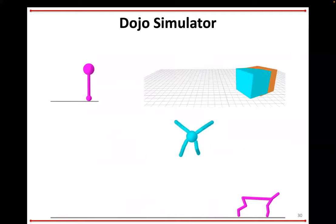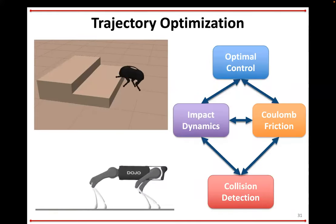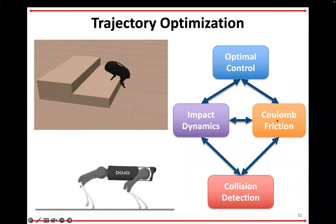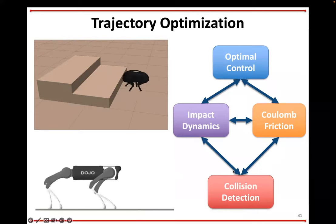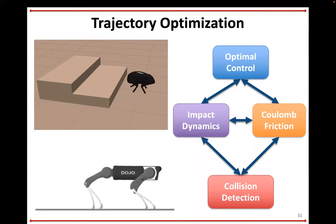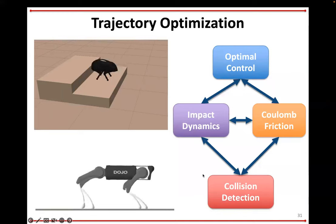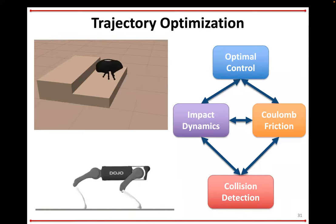Switching gears to trajectory optimization: now this is putting together the entire picture. At the bottom we have our geometry collision detection solver, Coulomb friction solver, impact dynamics solver, and at the top the optimal control problem solver. All of these are connected via blue arrows — the problem data from one is buried as a constraint function in another and vice versa. What we do to get the whole thing to work is crank down the central path parameters for all of these solvers in unison — start with everything smoothed out, then crank them together so the whole stack converges toward hard contact solutions altogether. That's the secret sauce that makes it work.